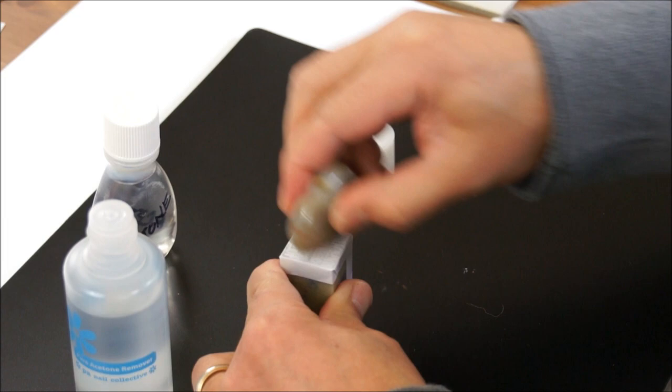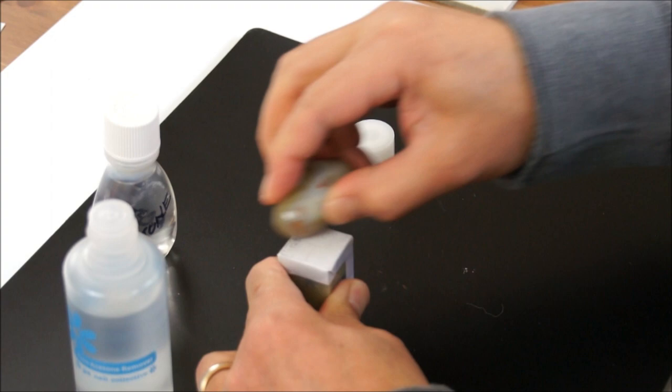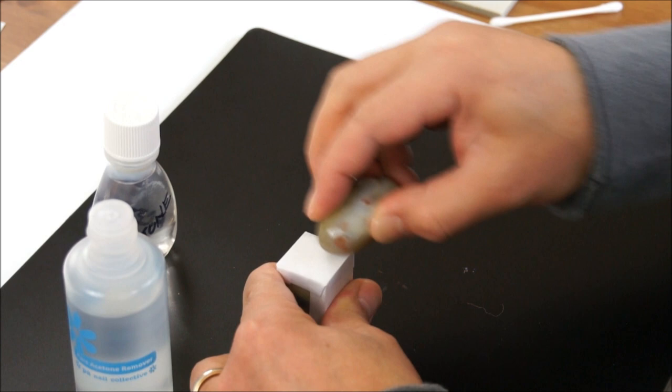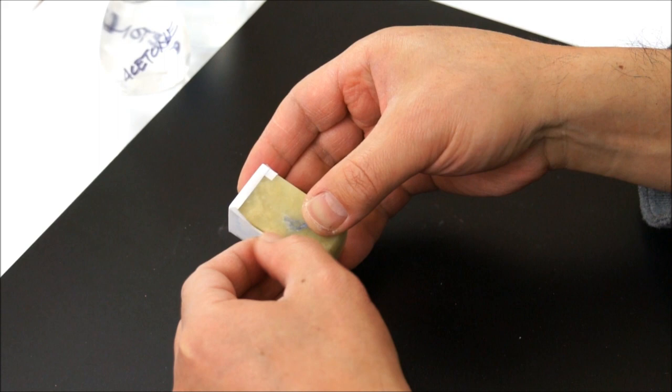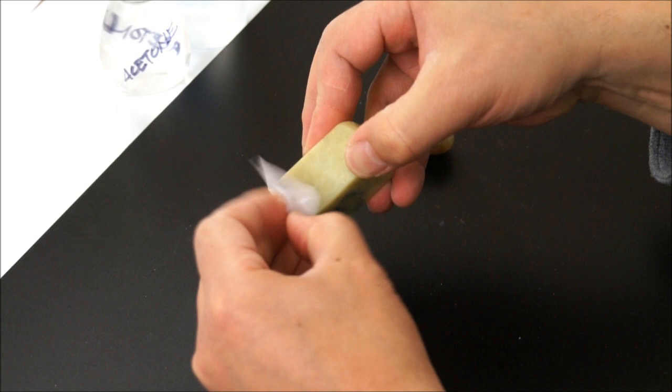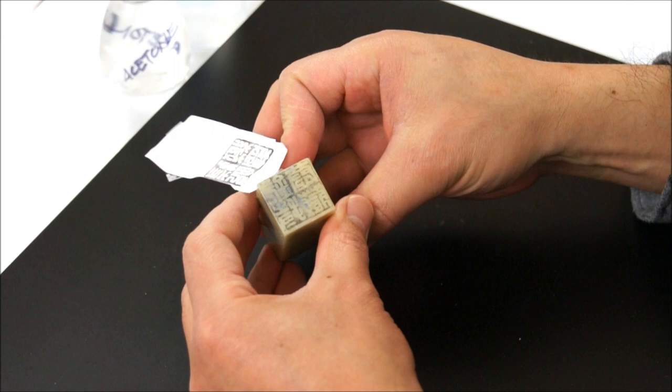This acetone evaporates very fast. So you have to do it very quickly. Because I'm working on the back of the paper, make sure it's completely wet or soaked. Because this is not the regular ink. It's the Xerox toner printout. So it won't melt. So it dries so fast. You see, it's already dry.